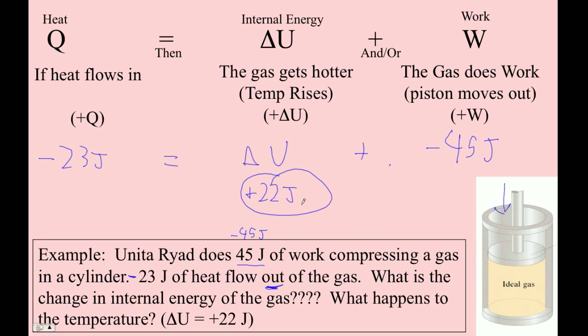So, let's see. What is the change in internal energy? There it is. What happens to the temperature? Well, remember, if the internal energy goes up, then the temperature must go up. Because internal energy is the net kinetic energy of the gas. And temperature is proportional to kinetic energy. If it's going faster, then it's a higher temperature. So let's look at another example.